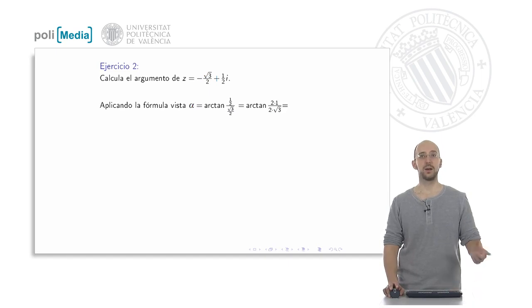In this case, if we simplify the double fraction, what we get would be 2 times 1 divided by 2 root of 3. If we simplify the 2s, we would simply have the arctangent of 1 divided by the root of 3, which would be pi sixths.